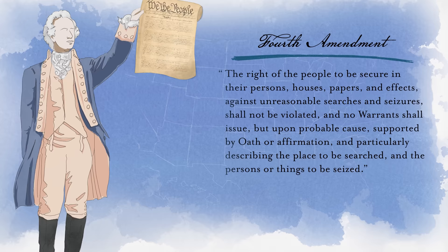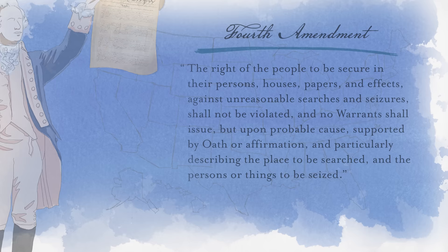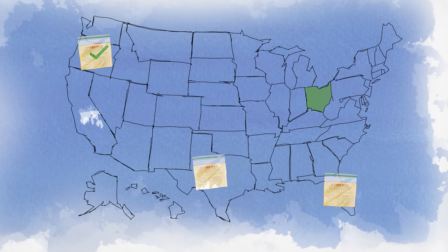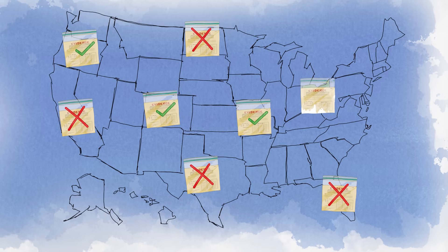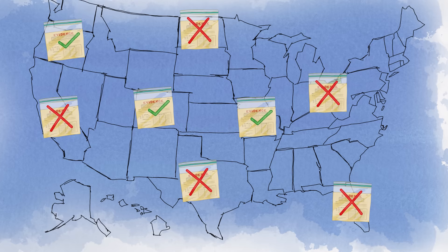The dissenters agreed that the Fourth Amendment is a fundamental part of our liberties in this country, but took the position that each state should be free to craft their own remedies for enforcing those rights. The dissenters would have allowed Ohio to decide to admit illegally seized evidence or exclude illegally seized evidence as it saw fit. The dissenters would not have imposed an exclusionary rule as some kind of constitutional requirement on Ohio and the other states.